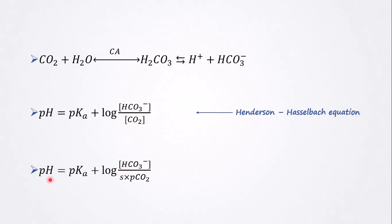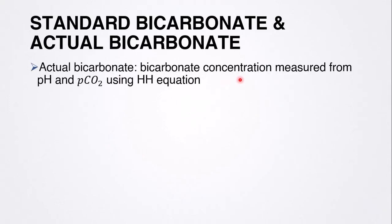We can measure the pH of blood and the partial pressure of carbon dioxide using instruments. From those measurements, we can calculate the bicarbonate concentration using the Henderson-Hasselbalch equation. That calculated bicarbonate concentration is called the actual bicarbonate — it is not measured directly, but calculated from pH and partial pressure of carbon dioxide.